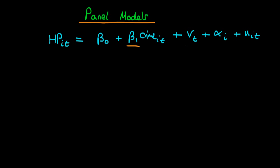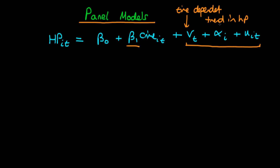The magnitude of that effect is given by coefficient beta 1. We suppose there are a whole range of other factors: some which are solely time dependent, which I'm going to call vt; some which are city dependent but don't vary across time, which I'm going to call alpha i; and then some idiosyncratic factors which also influence house prices in city i at time t. Each of these three terms are our error terms. The vt term represents things which are time dependent but don't vary across cities — for example, the upward trend in house prices across time, since the average US citizen has gotten slightly richer over time.